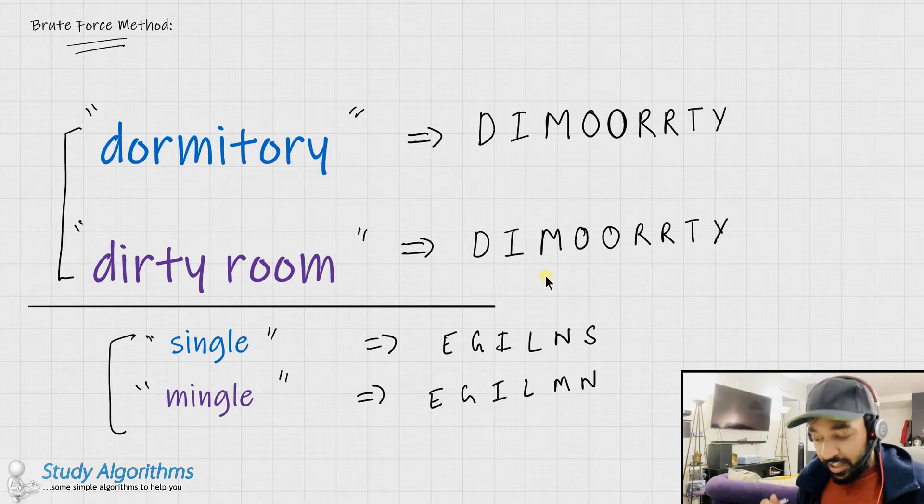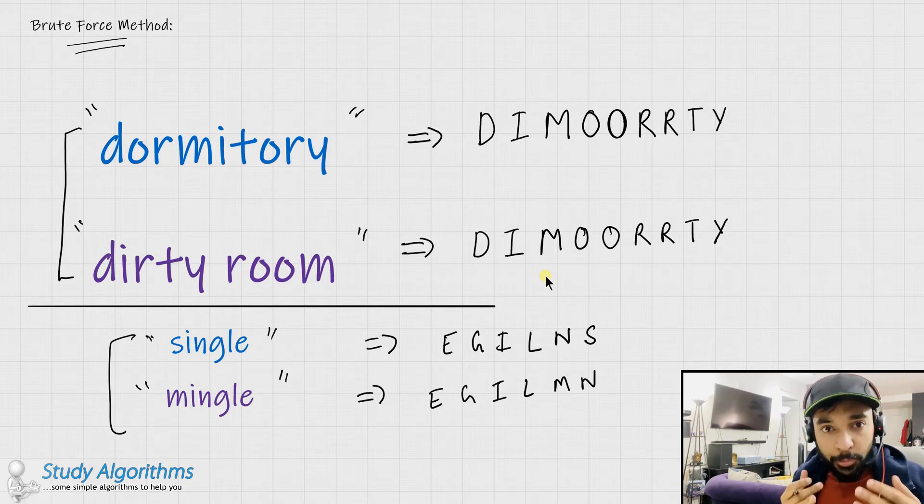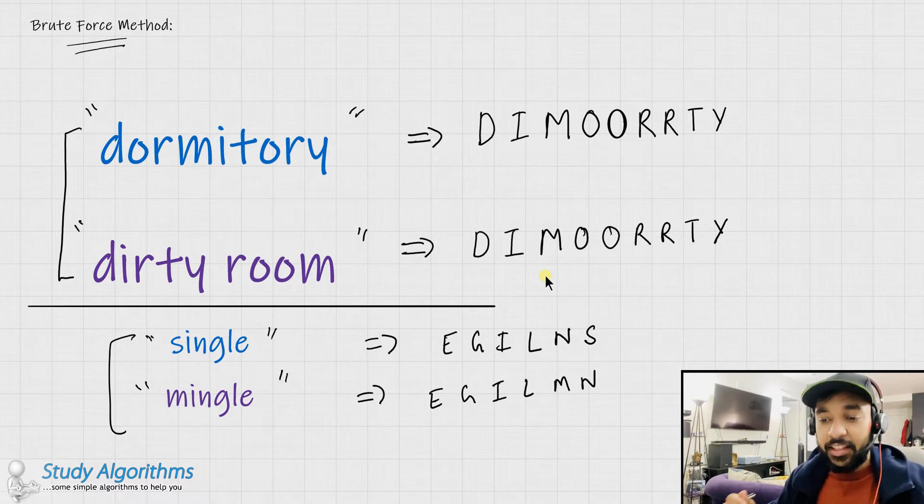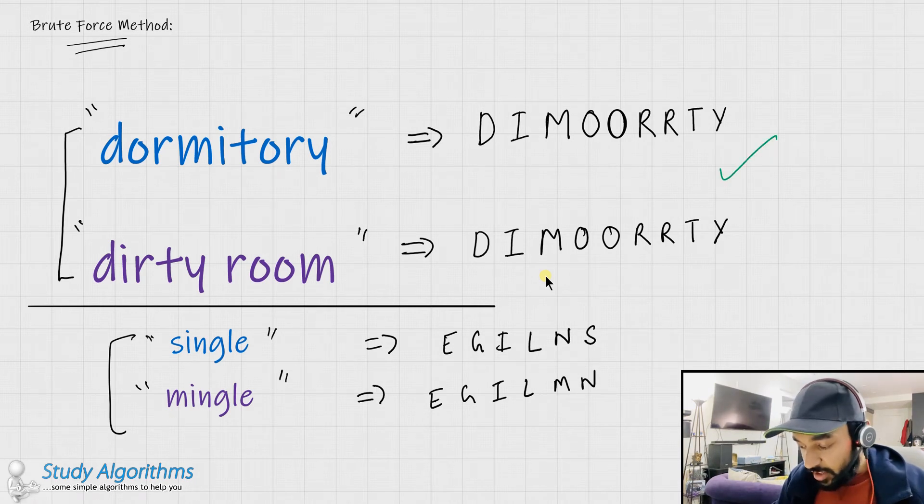Thus, you see that if the words were not anagram, the resultant output was different. So, as a brute force solution, what we can do is, we can just sort both of the strings and then see if the result is same. If the result is same, then it's a valid anagram. And if the result is different, it is not a valid anagram.